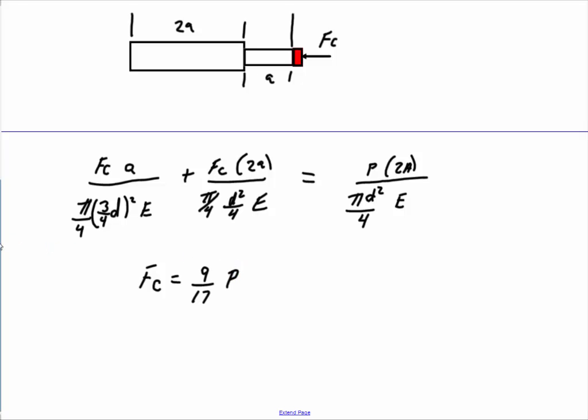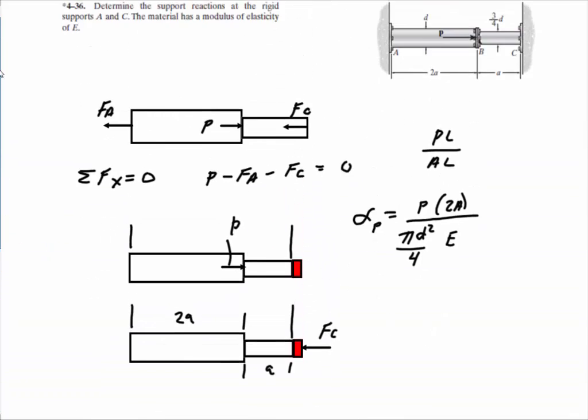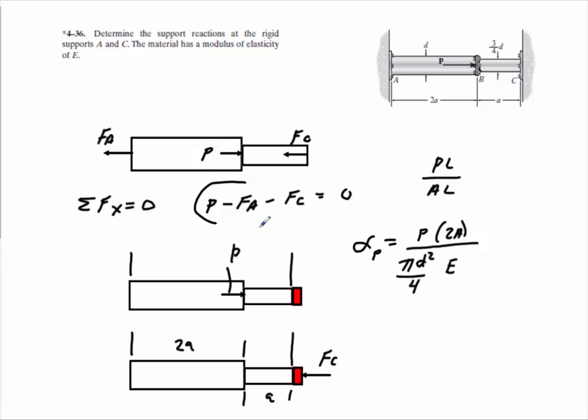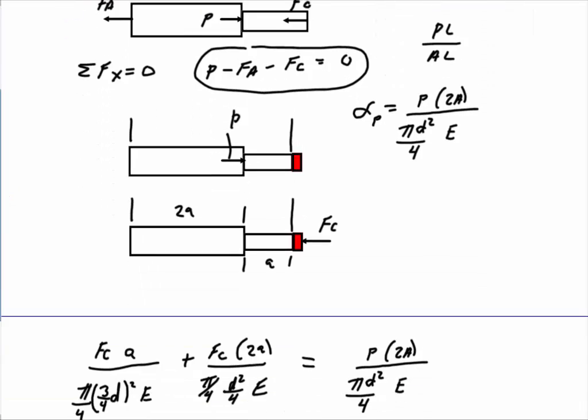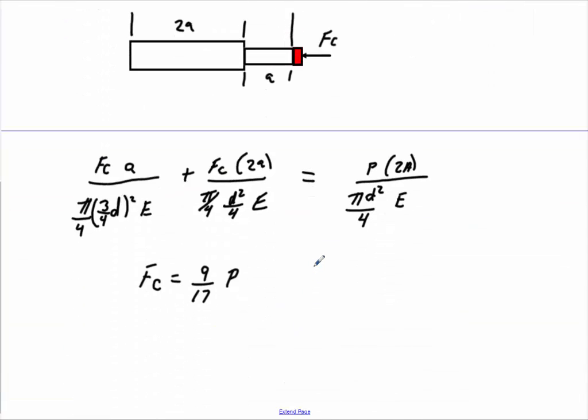And then once you know that, go back to this equation here where we summed all the forces and solve for FA. And when you do that, you'll get FA is equal to 8 over 17 times P.